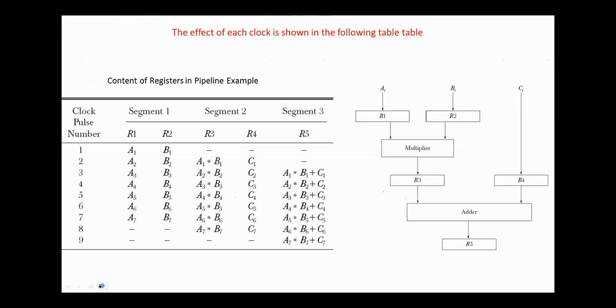Here are the contents of registers at each segment for a stream A1, B1, C1, till A7, B7, C7. In clock pulse 1, A1, B1 are applied to R1. Here we have nothing. On the next clock pulse, A1, B1 are multiplied, and C1 is transferred to R4. But at the same time, we'll have in R1, R2, A2, B2.